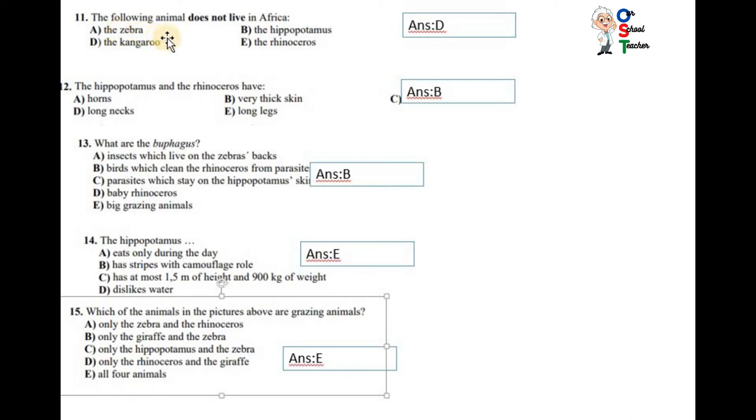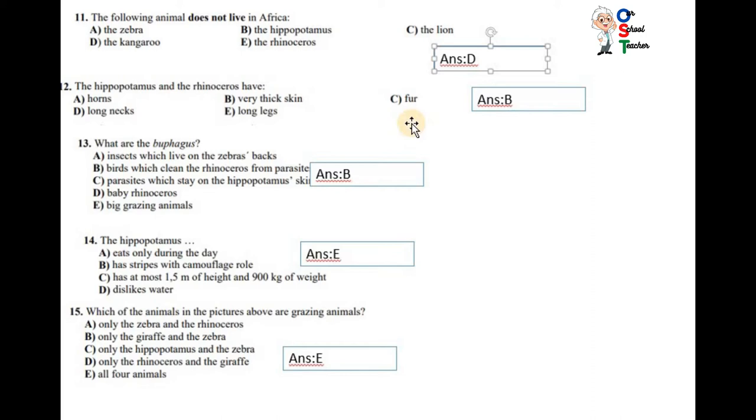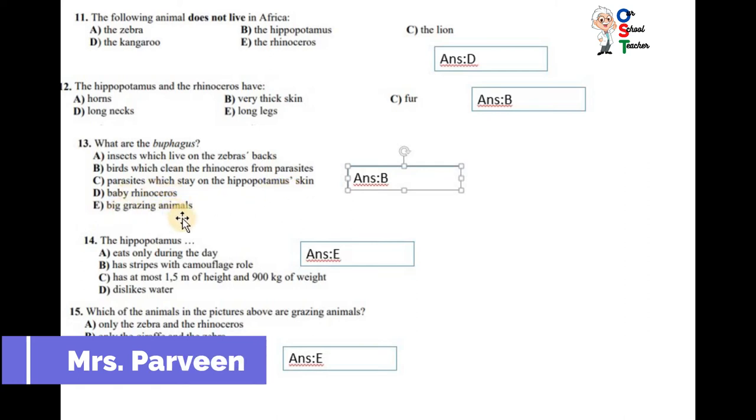Now question number 11. The following animal does not live in Africa: the zebra, the hippopotamus, the kangaroo, the dinosaur. Obviously kangaroo, D is correct. The hippopotamus and the rhinoceros have horns, very thick skin, long neck, long legs, fur. B is correct, very thick skin. What are Oxpeckers? Insects which live on zebra's back? Birds which clean the rhinoceros from parasites? Yes, it is correct. Parasites which stay on hippopotamus skin? Baby rhinoceros? Big grazing animals? No, B is correct, they are birds.